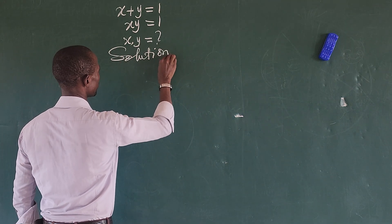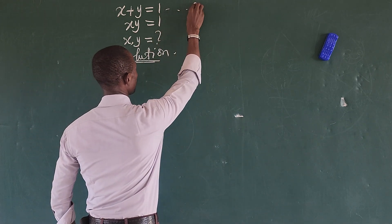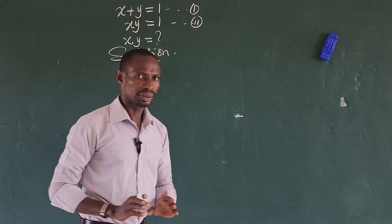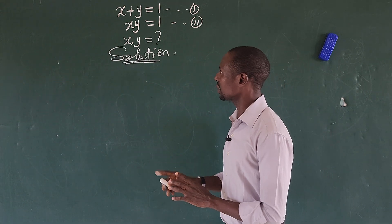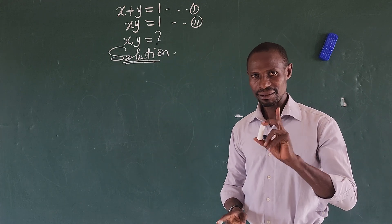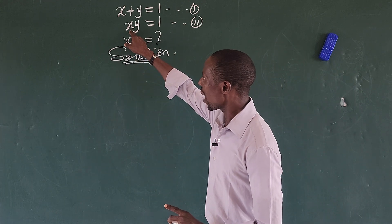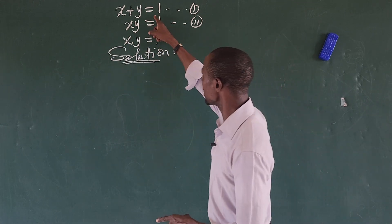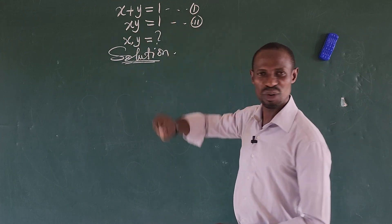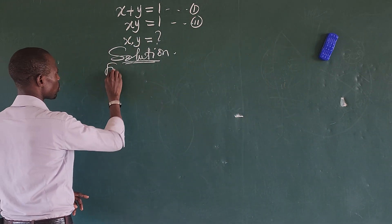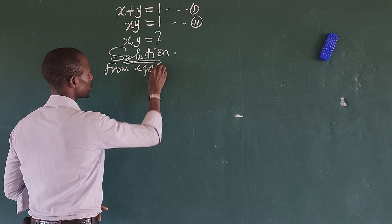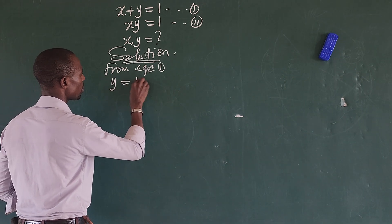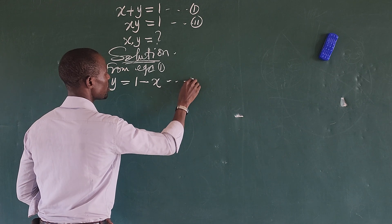We'll take our equations here. We're going to take x plus y equal to 1 as equation one, and xy equal to 1 as equation two. Now from equation one, I want to use a different approach from a similar challenge I solved before — I want to make y the subject of the formula from equation one. This gives us y equals 1 minus x. Let's call this equation three.